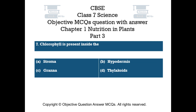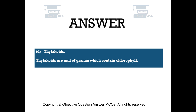Question number 7. Chlorophyll is present inside the. Option A: Stroma. Option B: Hypodermis. Option C: Grana. Option D: Thylakoids. The right answer is option D: Thylakoids. Thylakoids are units of grana which contain chlorophyll.